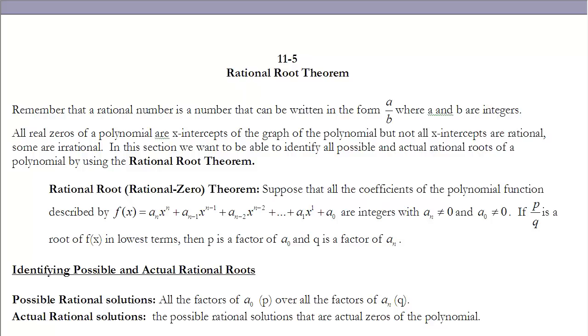So let's look at what the Rational Root Theorem tells us. It says, suppose that all the coefficients of a polynomial function described by this, and I know that looks somewhat confusing, but I'll try and break that down here in just a little bit for you, are integers where a sub n is not equal to 0 and a sub 0 is not equal to 0. So these values are not equal to 0.